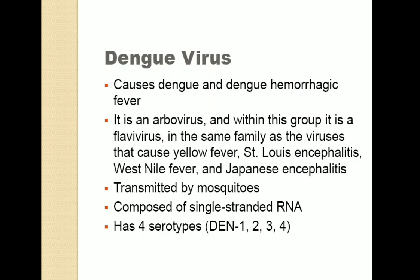Dengue virus causes dengue and dengue hemorrhagic fever. It is an arbovirus and within this group it is a flavivirus — in the same family as the viruses that cause yellow fever, St. Louis encephalitis, West Nile fever, and Japanese encephalitis. It is transmitted by mosquitoes, is a single-stranded RNA virus, and has four serotypes.